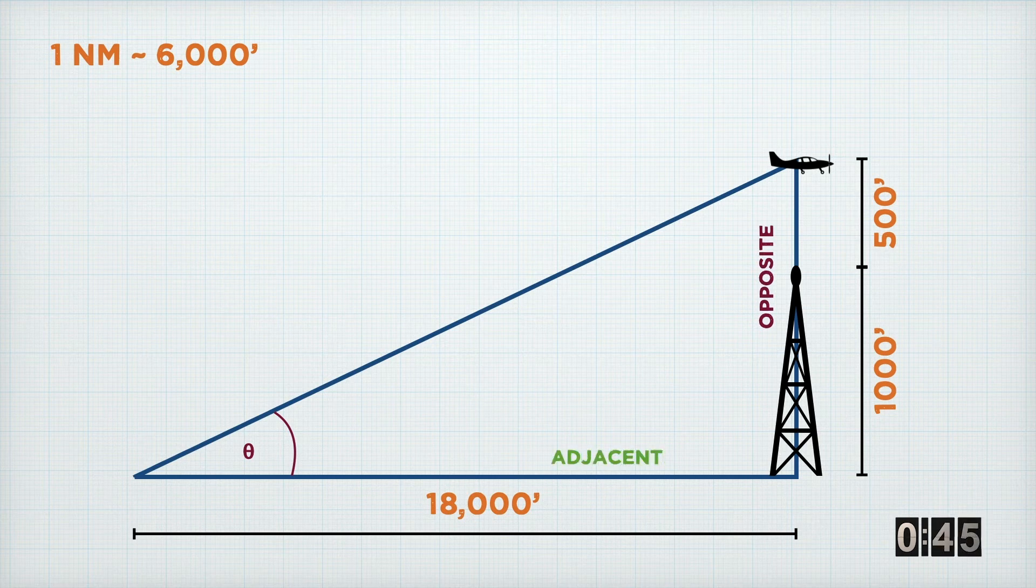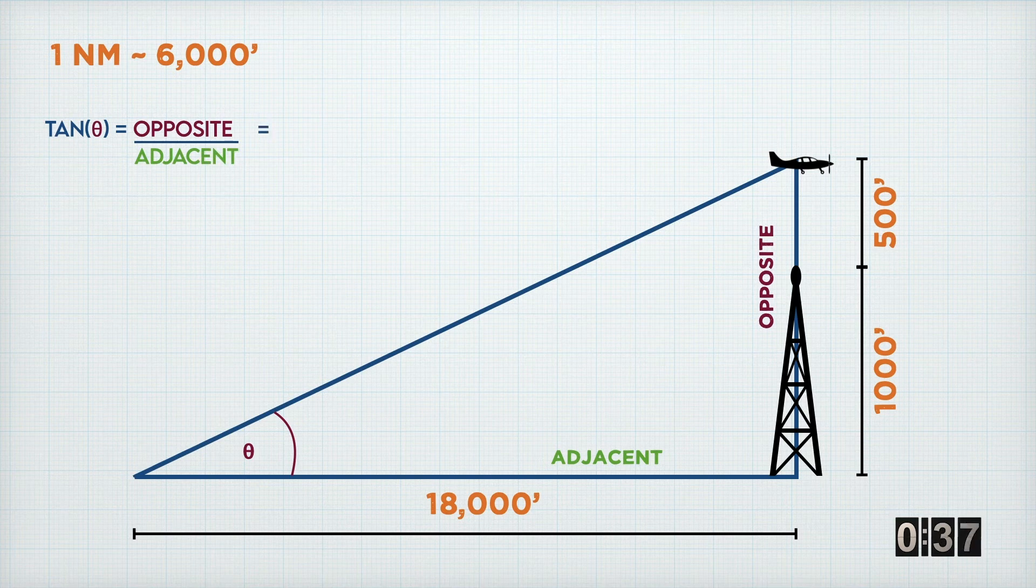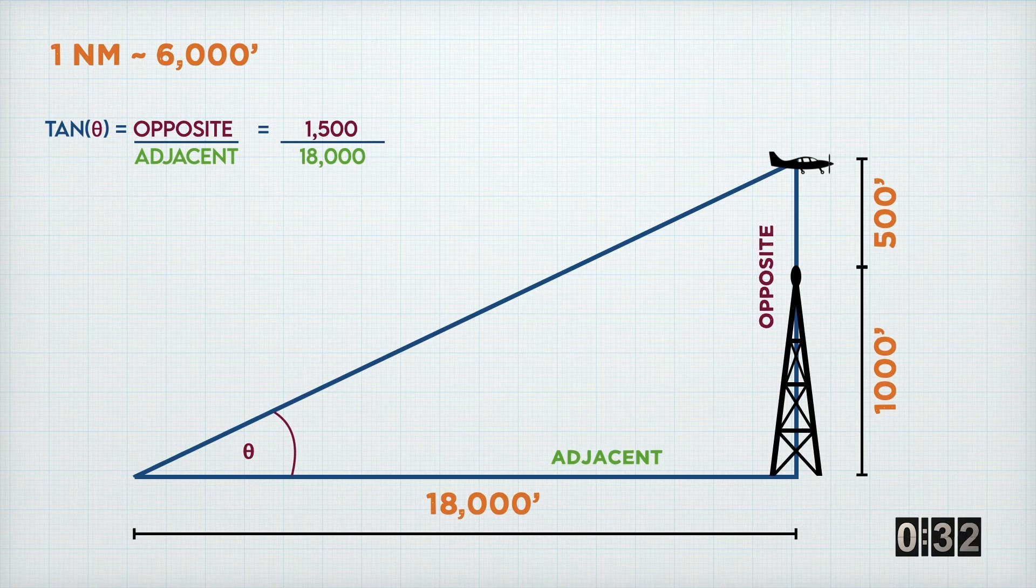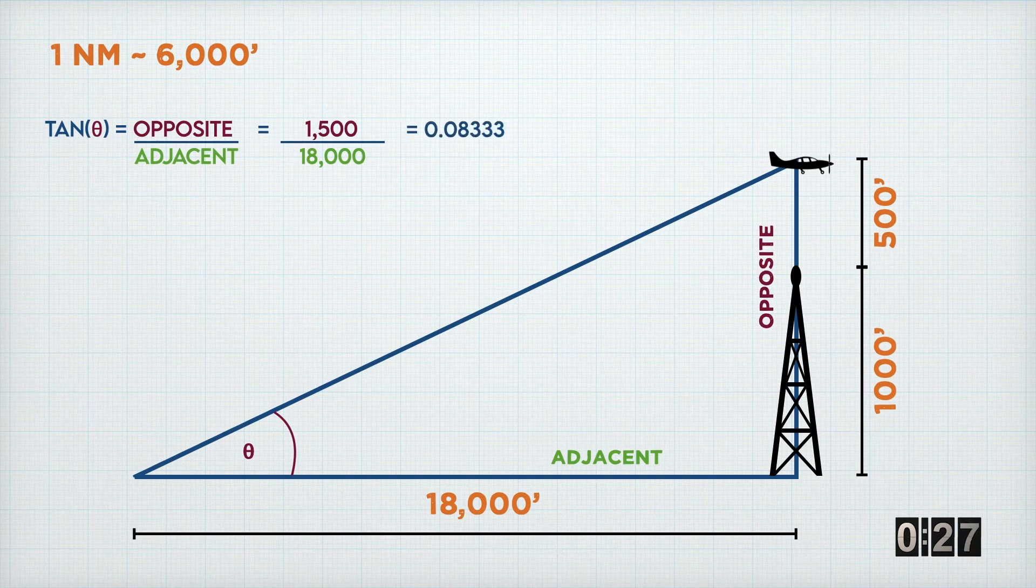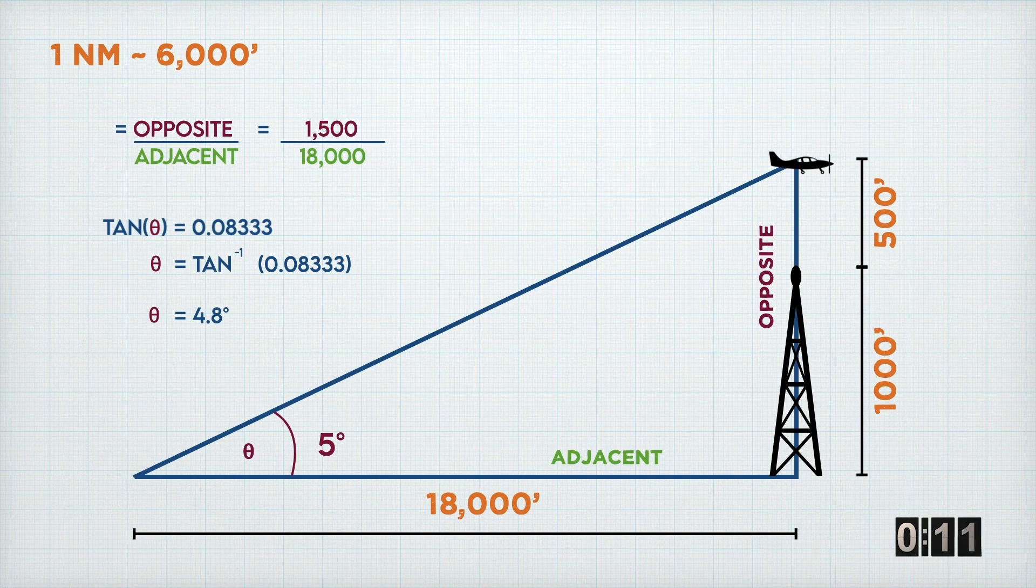And we can see that we're looking at the side opposite and the side adjacent to the angle that we're interested in. So from SOHCAHTOA, we can see we're dealing with the tangent function. So our formula would look like this, which is the same as 1,500 divided by 18,000. And if you do that on a calculator now, you'll come out with a number like 0.08333 recurring. But just like our last example, we're not finished yet.